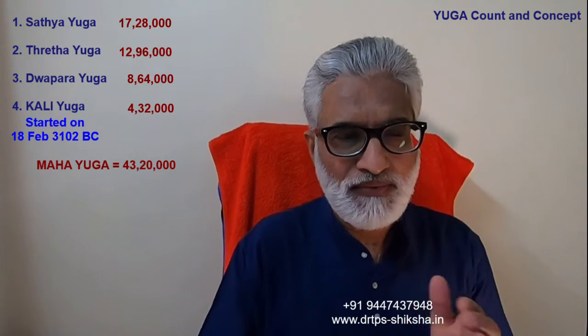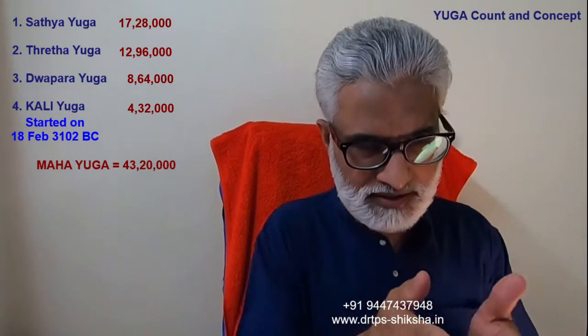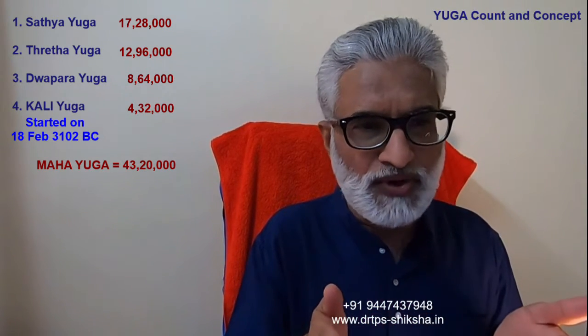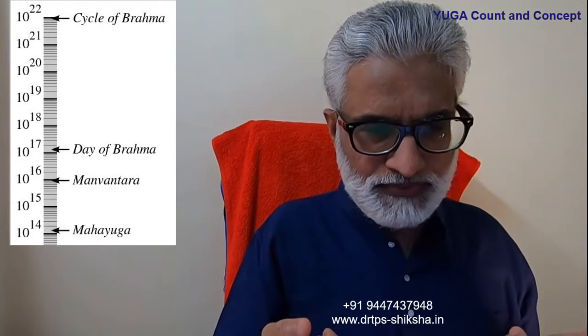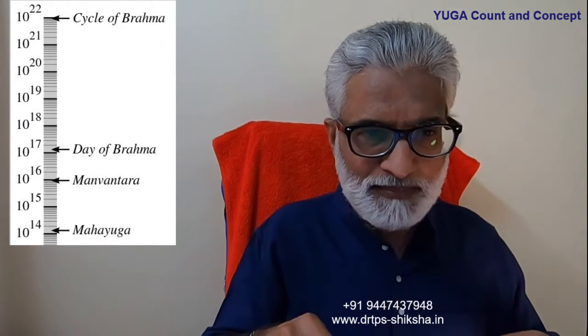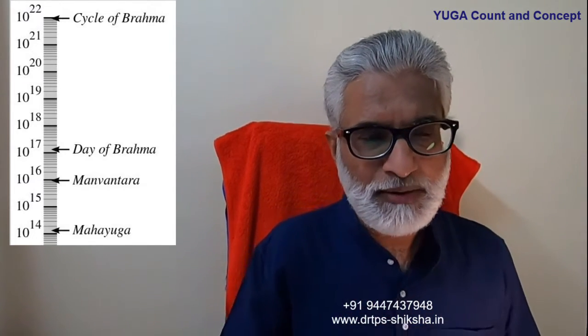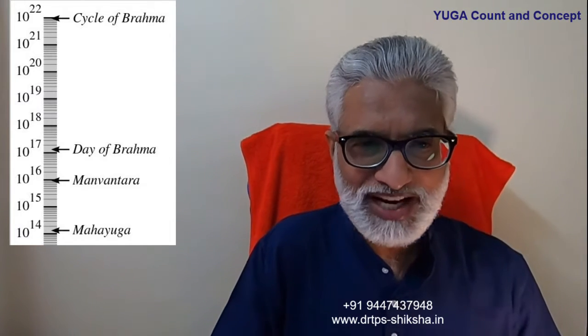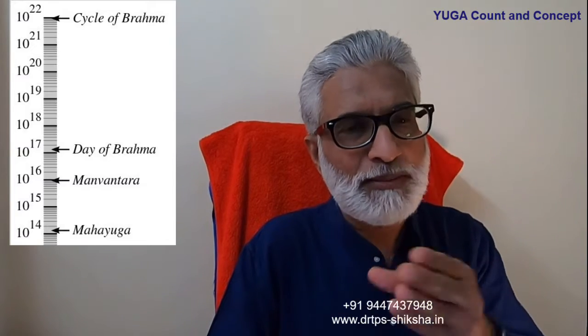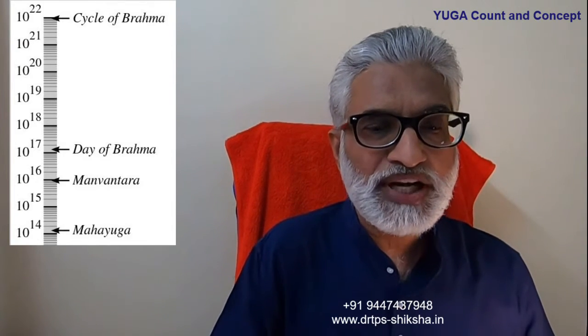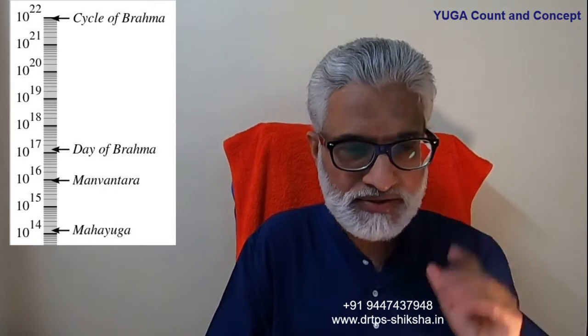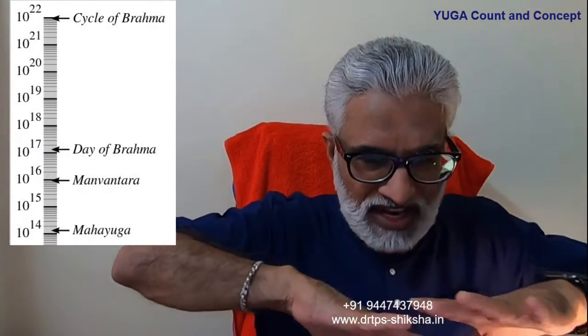1 Maha Yuga is 1 day or night — that means 12 hours — for Brahma. So 2 Maha Yugas, day and night added together, equals 1 full day for Brahma. Multiply that by 365 is 1 year for Brahma. Multiply that by 120 years and 1 Purusha will be 1 Manvantara. 27 and a half such Manvantaras — multiply by 27 — gives approximately 198 crore years. That is the life of Earth as far as the Vedic concept is concerned.